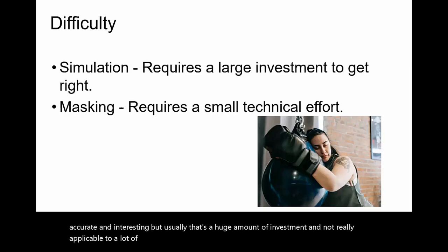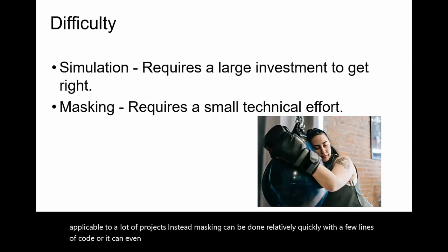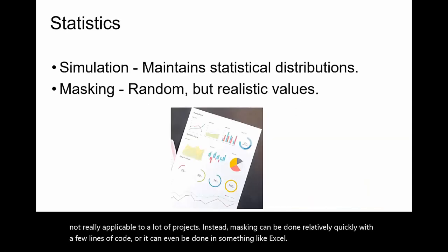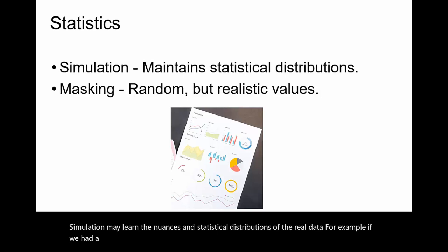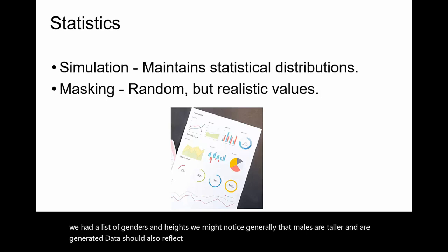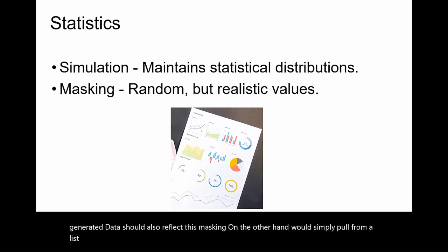Simulation may learn the nuances and statistical distributions of the real data. For example, if we had a list of genders and heights, we might notice that males are generally taller, and our generated data should reflect this. Masking on the other hand would simply pull from a list of random but realistic numbers of our choosing, and this can be a quicker solution for potential GDPR compliance.